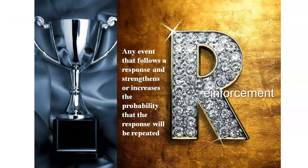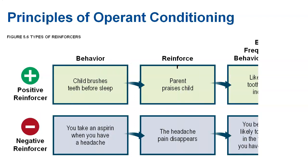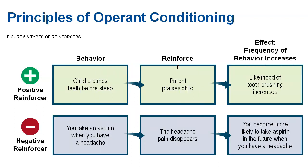When we talk about operant conditioning, focus on rewards and punishments. Reinforcements are about increasing a behavior — making it more likely to happen. It can be positive or negative. In psychology, positive means adding something and negative means taking away. A positive reinforcement is adding something to increase a behavior. A negative reinforcement is taking something away in order to still increase a behavior — because it is still a reinforcement.